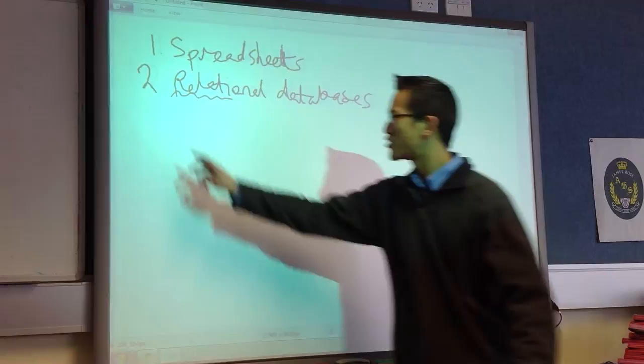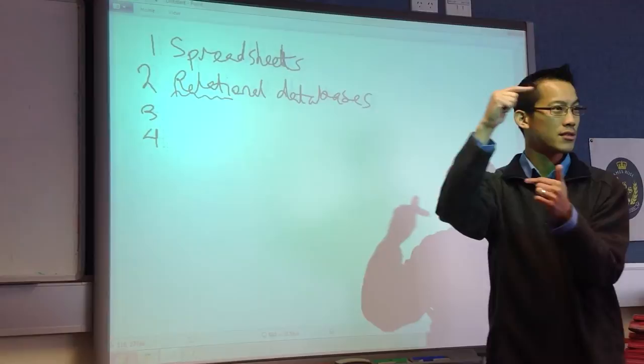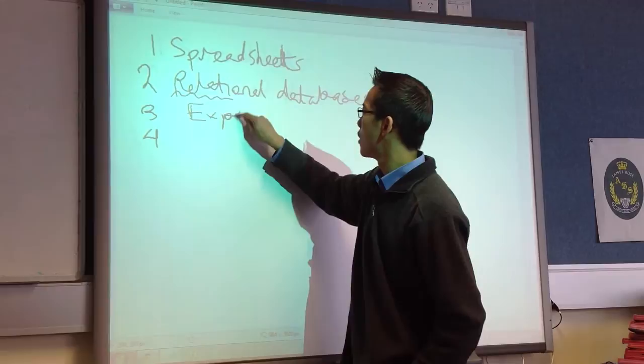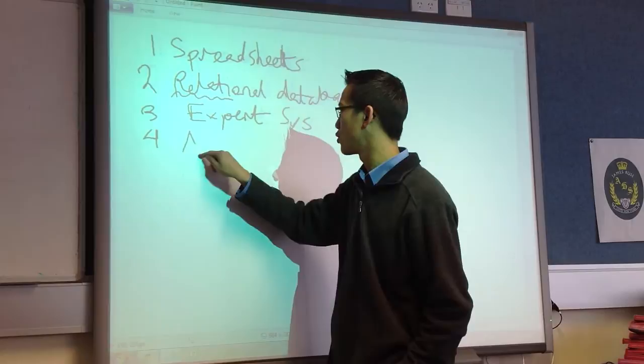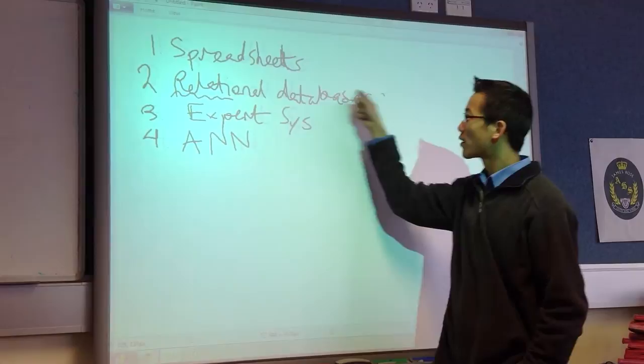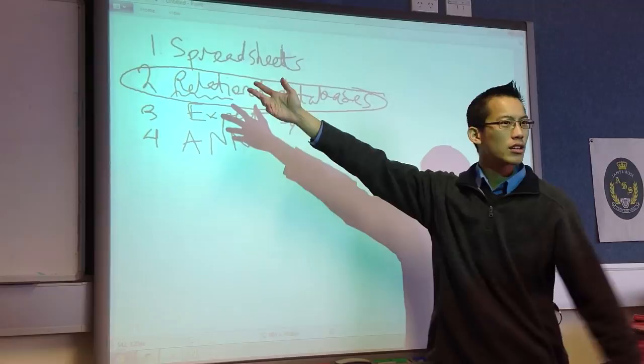Relational databases, in a very real way, are spreadsheets on steroids. Now, even though we're not going to look at them today, just very quickly, so you remember, what are the two more complicated types? Do you remember what they were called? Expert systems. And the very last one was modeled on the human brain, so it's called an artificial neural network. We're going to spend plenty of time looking at those two. They're a lot of fun. So relational databases is where we're at today.